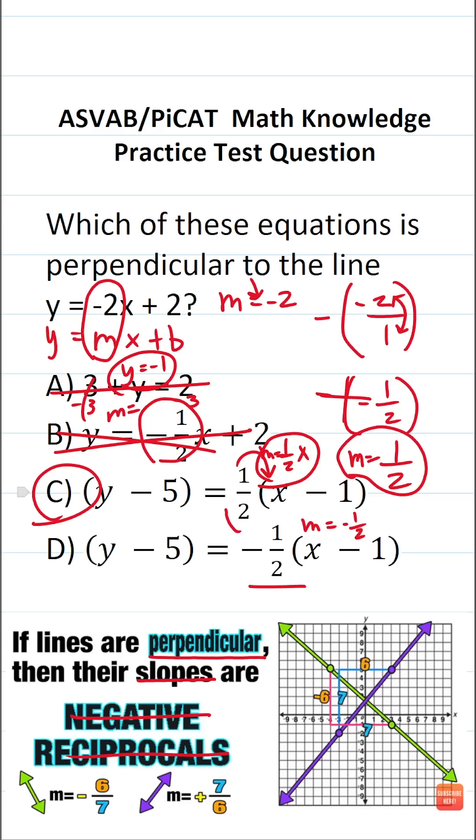For this one, you have to remember that if lines are perpendicular, then their slopes are negative reciprocals.